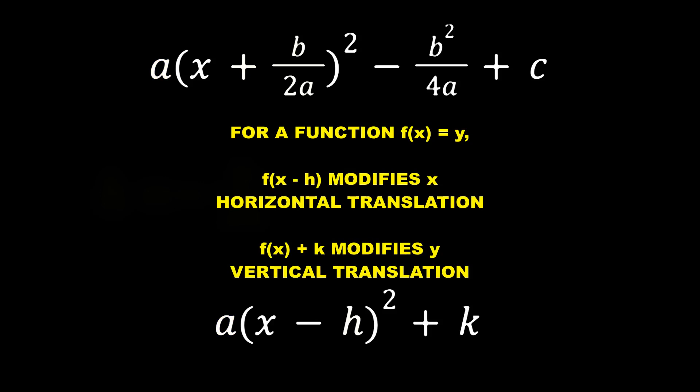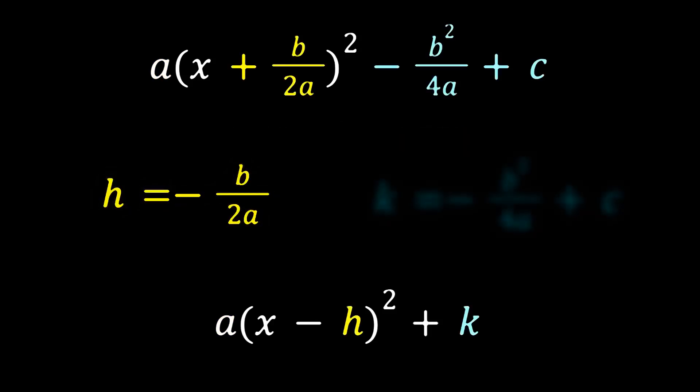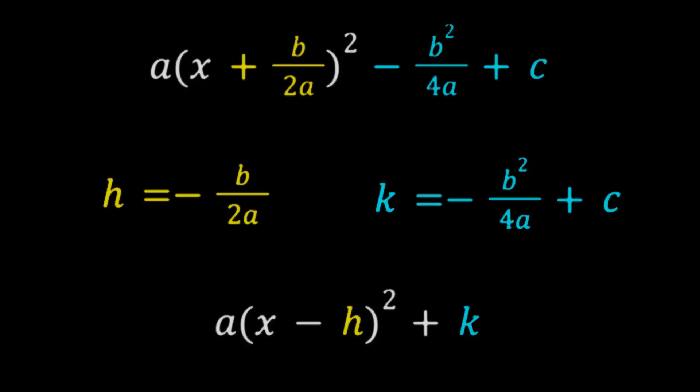The parabola will be translated horizontally, a distance of negative b over 2a, and vertically a distance of negative b squared over 4a plus c. Putting the parabola into vertex form essentially just formalizes these translations of the vertex.